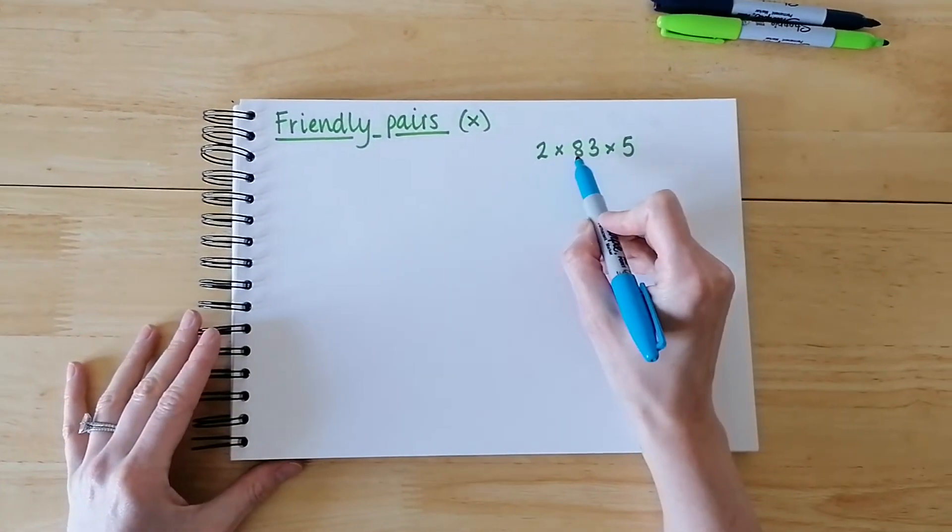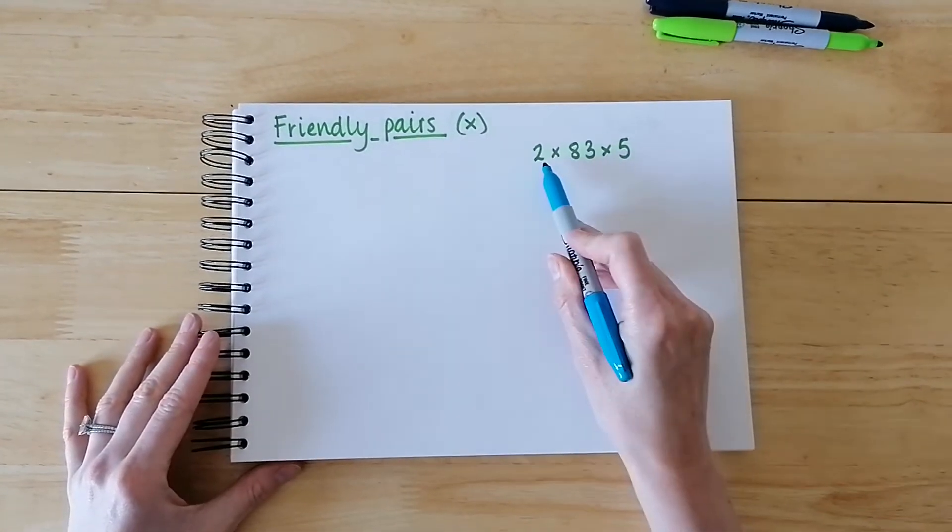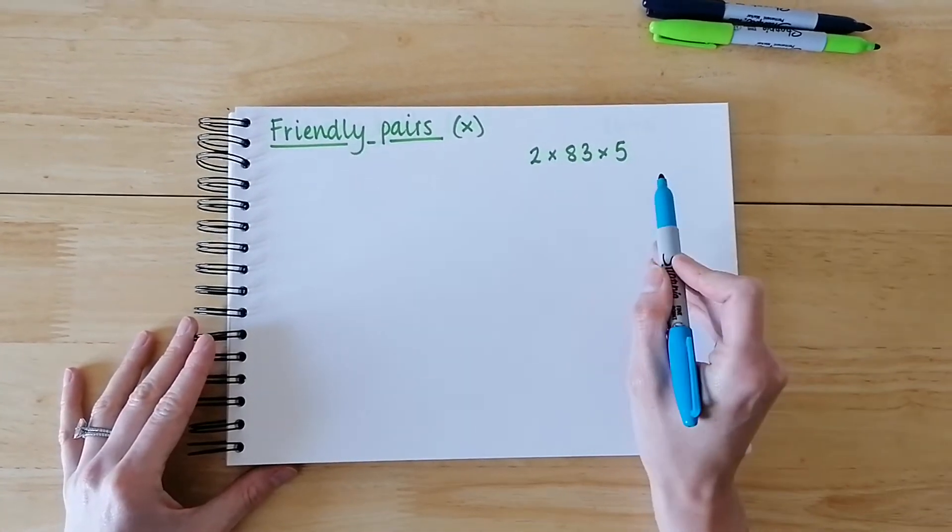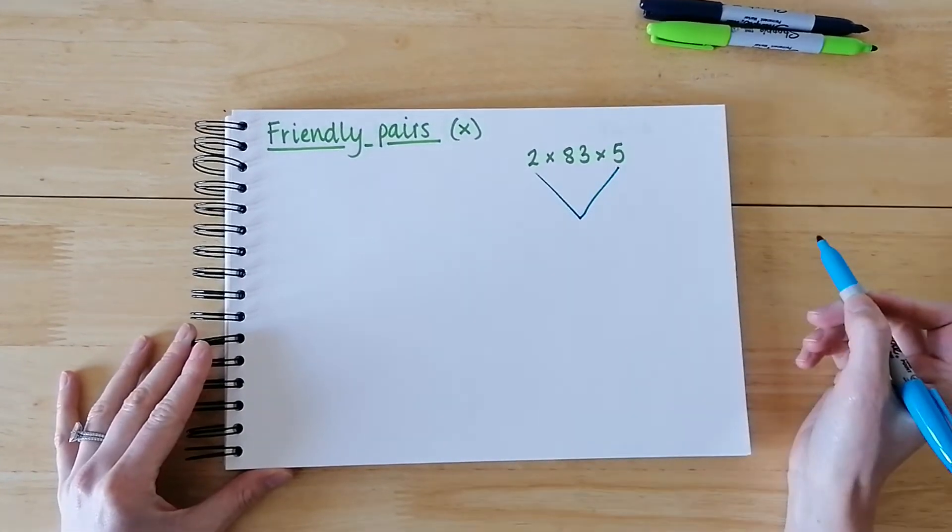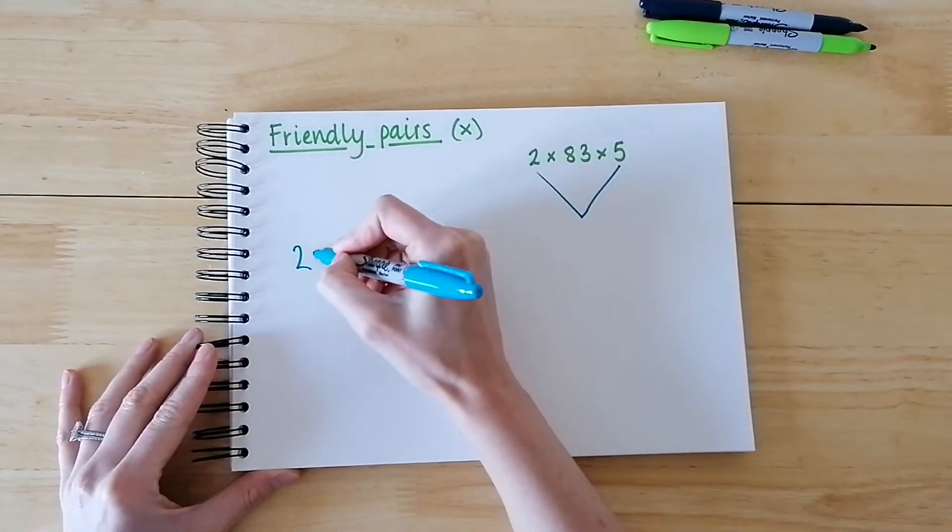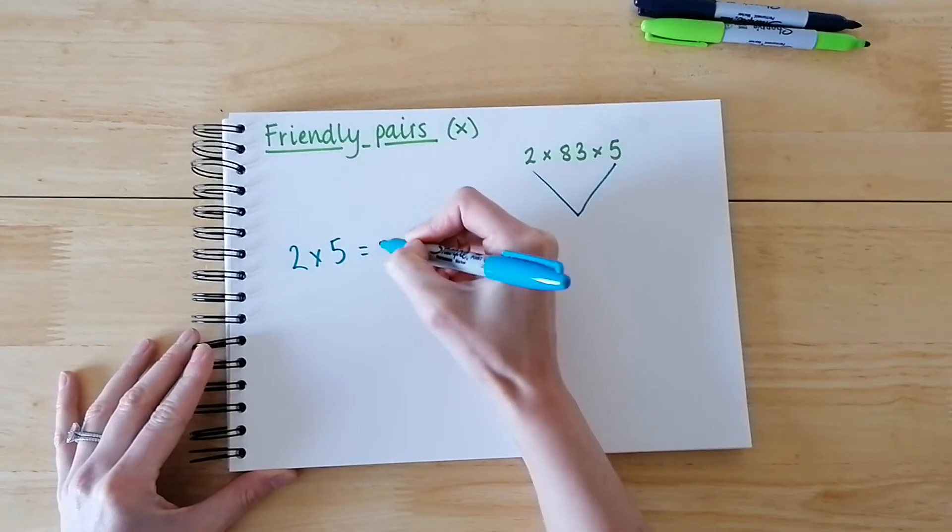So rather than doing 2 times 83 times 5, I know that 2 times 5 gives me 10. So I'm going to multiply them together. So I know that 2 times 5 equals 10.